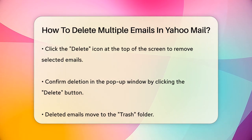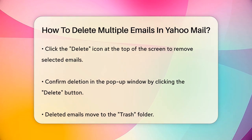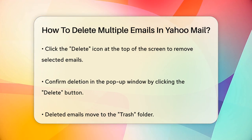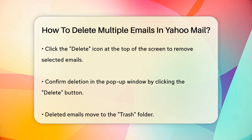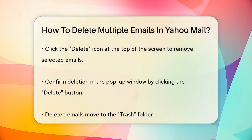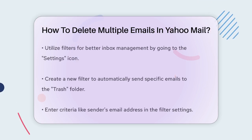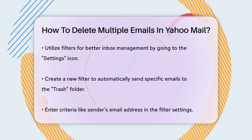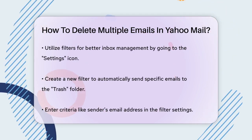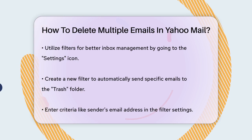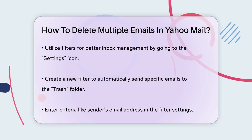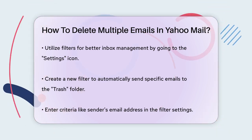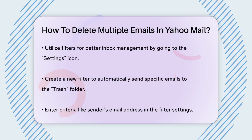Another way to manage your inbox is by using filters. Go to the Settings icon at the top right corner of the screen, select Settings, and then choose Filters from the left-hand menu. You can create a new filter that automatically sends emails from a specific sender, with certain keywords, or subject lines directly to the Trash folder.